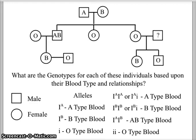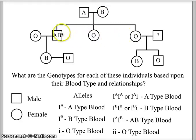We remind you that a male is a square and a female is a circle. In this case we have a male with A blood and a female with B blood who have three children: one is a male with AB blood, a daughter with O blood, and a second daughter with O blood.